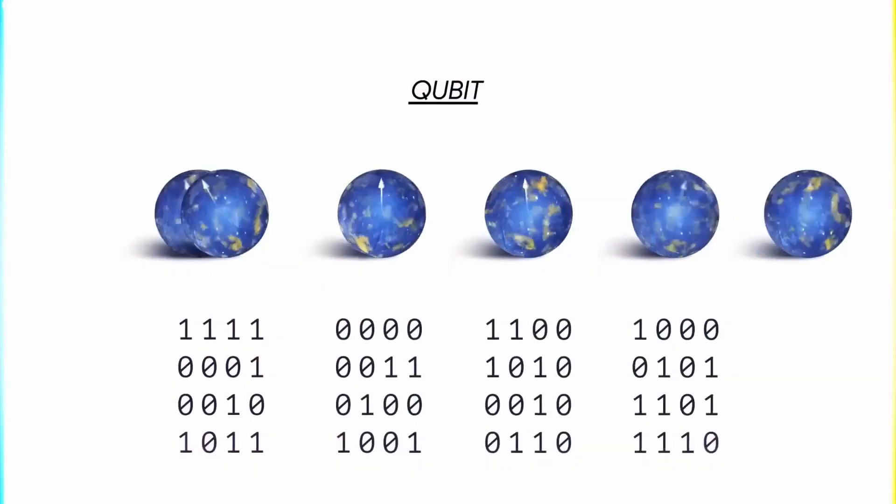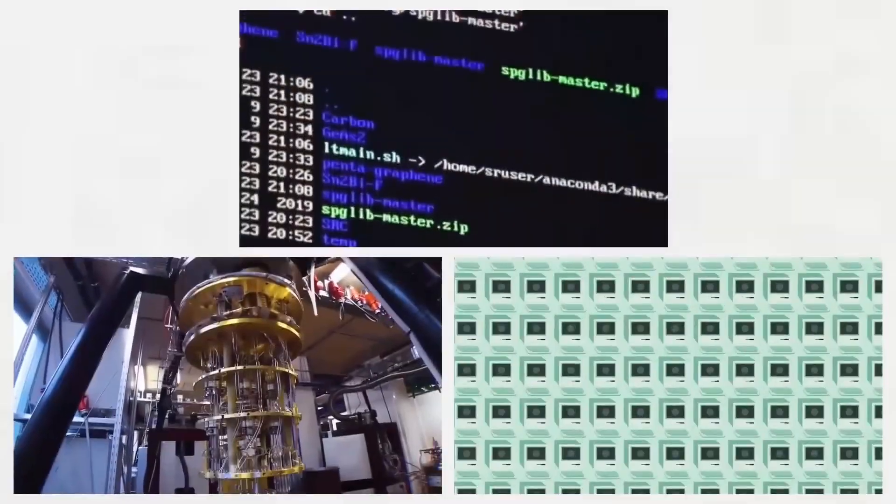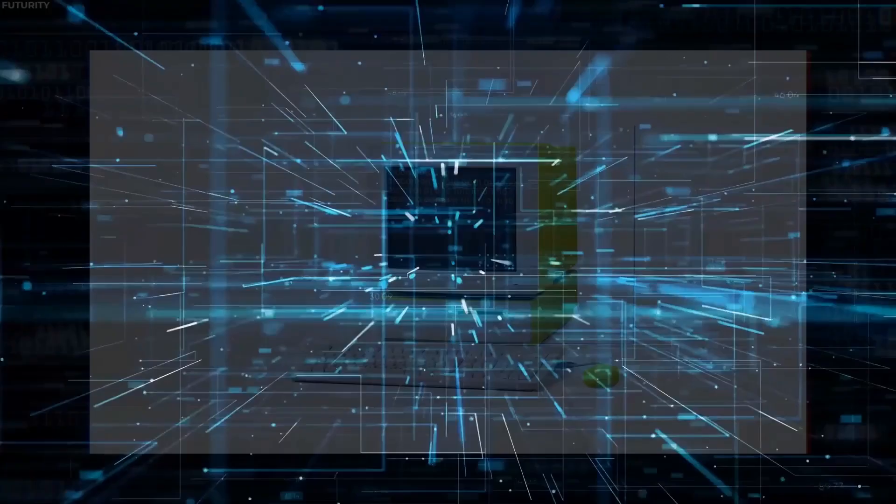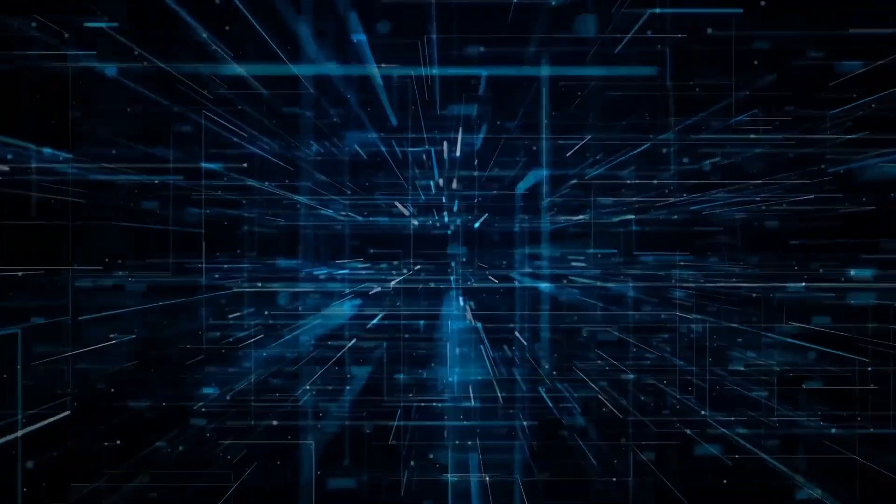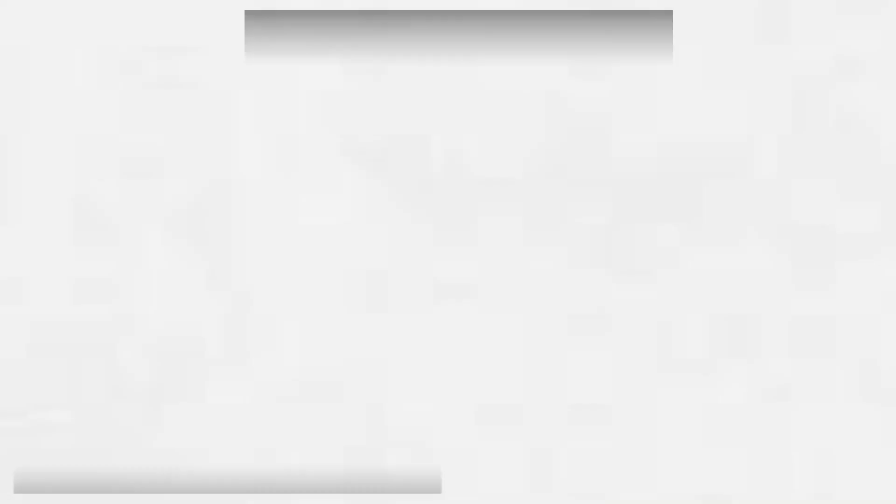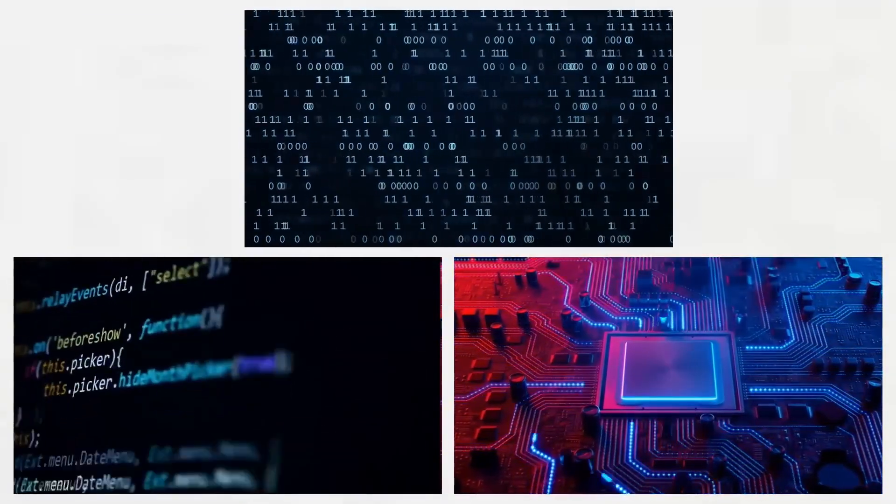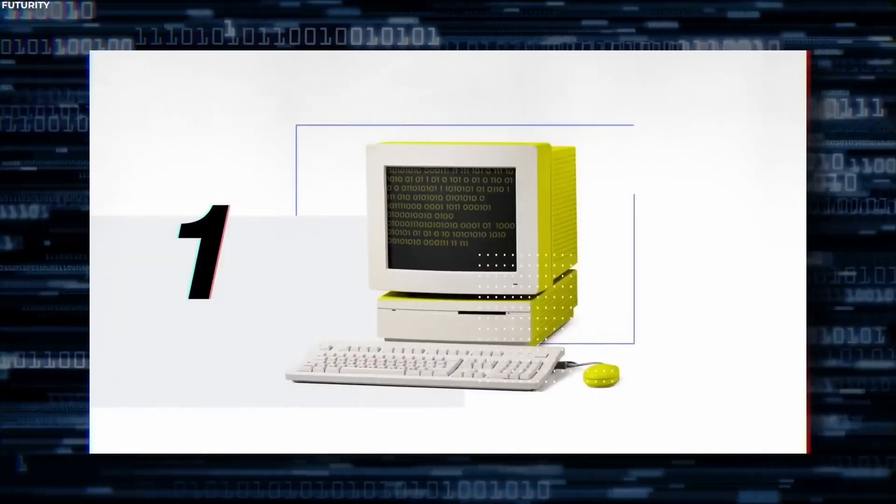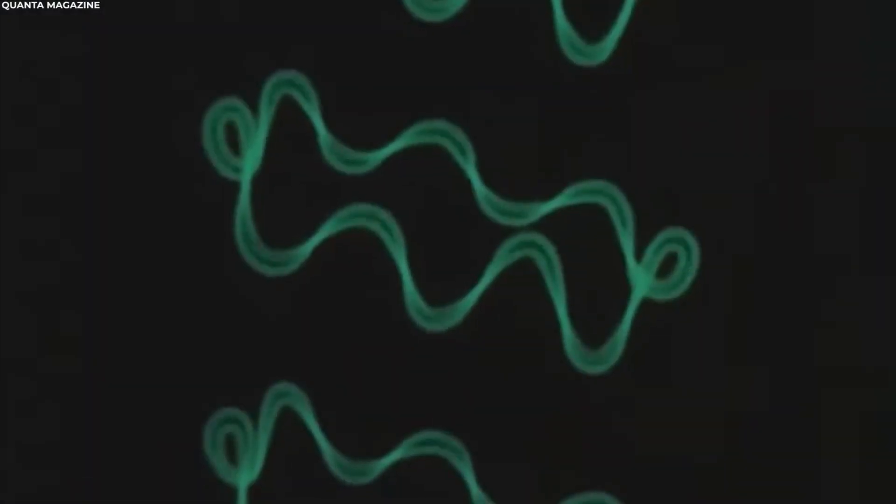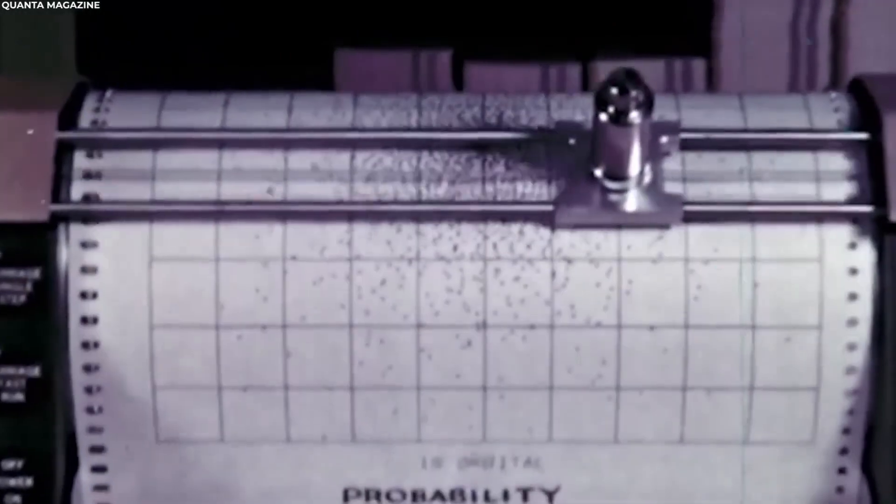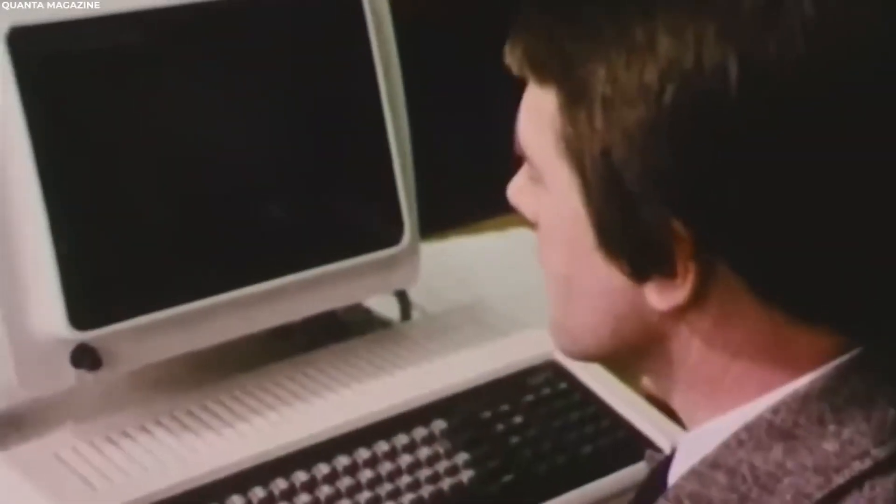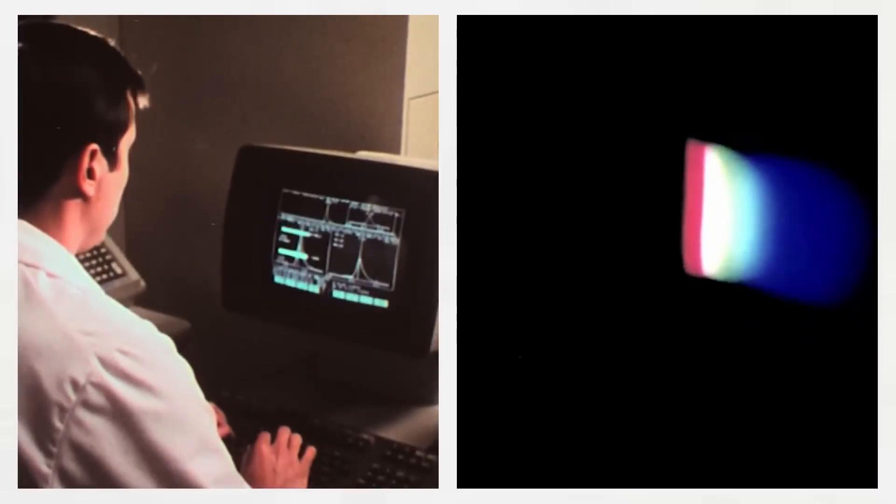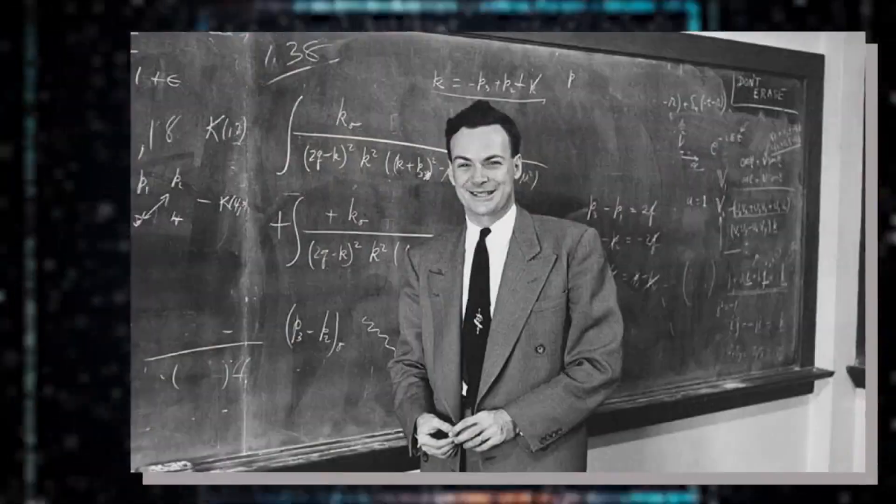What does all this mean? Quantum computers are not your typical machines. They are a dramatic departure from classical computers, operating in a way that can process vast amounts of information simultaneously, thanks to the extraordinary properties of qubits. The roots of this quantum revolution trace back to the early 20th century, a period when quantum theory began reshaping our understanding of the universe.